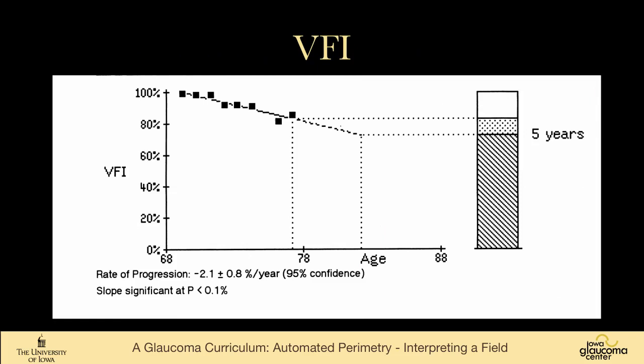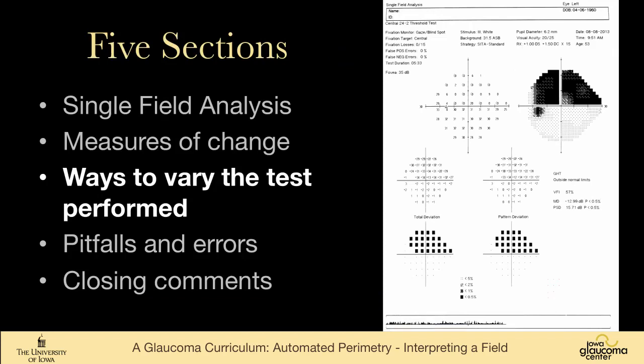And the glaucoma progression analysis will say that this is likely progression in this patient's visual field. You can also look at the visual field index over time. You can see that this is trending down. The rate of progression of minus 2.1 decibel per year, and that's significant with a p-value of less than 0.1%.